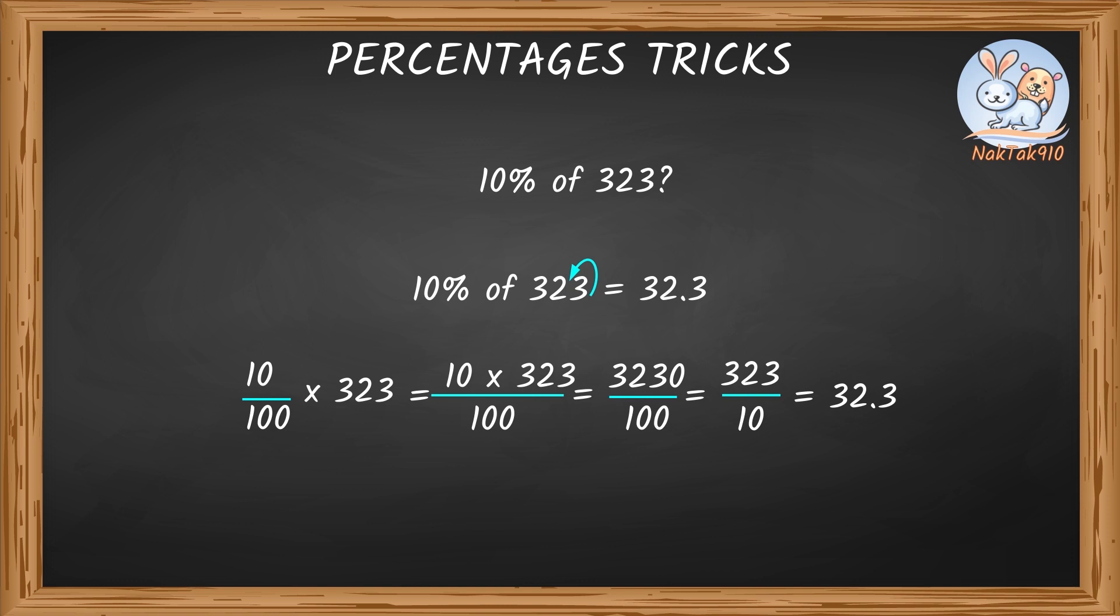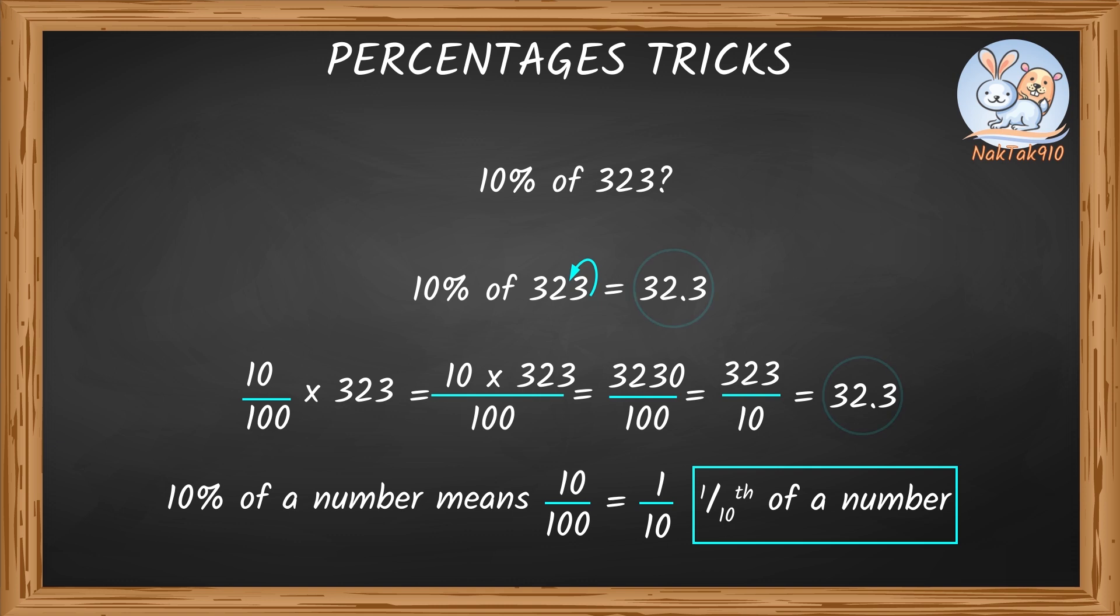Dividing by 10 means to just place the decimal point before the last digit. Similarly, 10% of number means 10 by 100 or 1 by 10th of a number, which is same as just dividing by 10. So, we need to place the decimal point before the last digit. So, we got the same answer either way. That's 32.3.